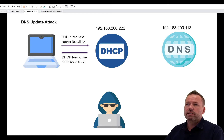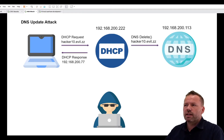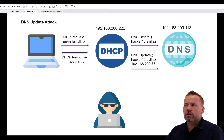The DHCP server will respond with a DHCP response, announcing a free lease — a free IP address. Furthermore, it would be useful to have the client's hostname in the DNS server. Therefore, the DHCP server sends a DNS deletion package to the DNS server, ensuring an existing hostname gets deleted. After the DNS deletion, the new entry will be sent to the DNS server.